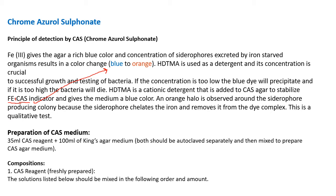For medium preparation, King's B medium is generally used. 35 ml of CAS reagent is mixed with 100 ml of King's agar medium; both should be autoclaved separately before mixing. The CAS reagent should be freshly prepared.